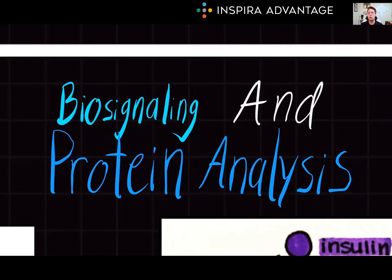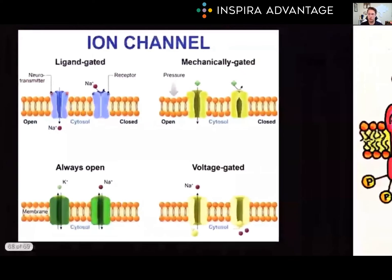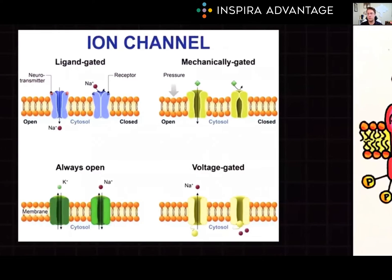Understanding these concepts is crucial for navigating topics such as cell biology, biochemistry, and molecular biology. Starting with biosignaling, ion channels play a critical role. These channels regulate ion flow into or out of the cell, essentially acting as gatekeepers. Ungated channels are always open, allowing ions to pass through freely, whereas voltage-gated channels open within a certain range of membrane potentials or electric charges.